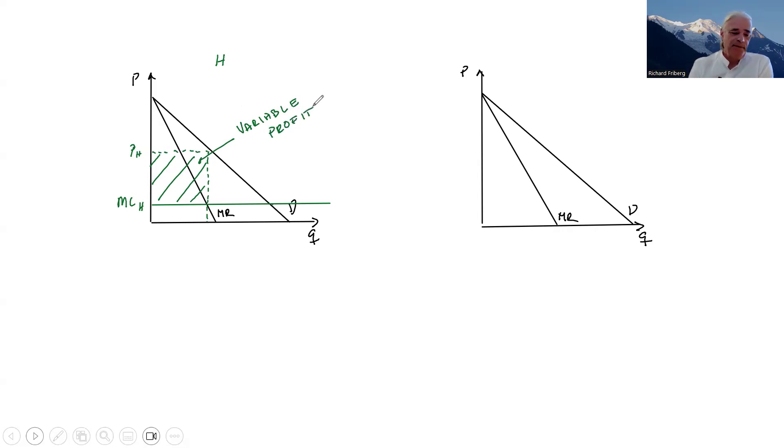If we have someone called H or high, we're also likely to have someone called L or low. So that's this poor fellow. L here has MCL, high marginal cost.